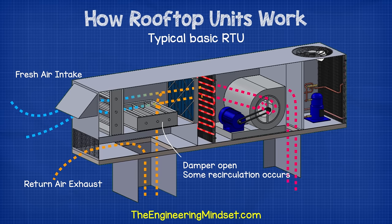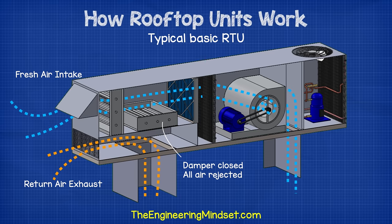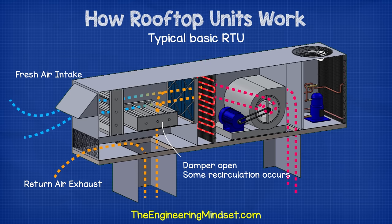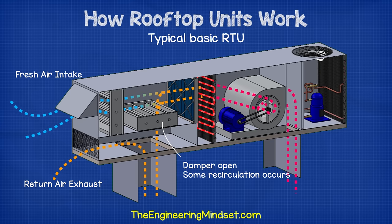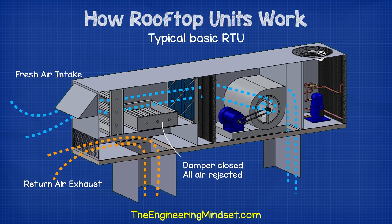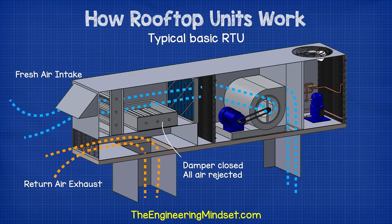Another very common version again has a return air damper, but this time some or all of the air can be rejected to atmosphere. The temperature of the outside air and the return air — and sometimes the CO2 levels — will dictate how much air is rejected and how much is recirculated. When the outside air temperature is below or close to the desired indoor temperature, 100% fresh air can be blown into the building with none recirculated. This is referred to as a free cooling cycle or an airside economiser cycle.